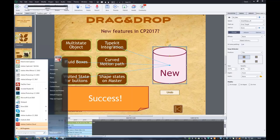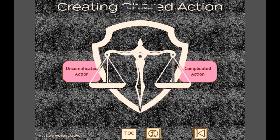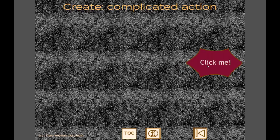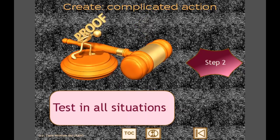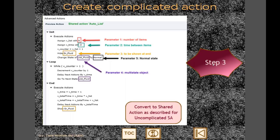That was the workflow for an uncomplicated action. For a complicated action, I recommend first creating it as an advanced action. Here's an example from my blog - a complex action for automatically appearing lists. Once created and thoroughly tested, you convert it to a shared action. You'll need to think carefully about which elements will be parameters, and I'll explain the difference between compulsory and candidate parameters shortly.